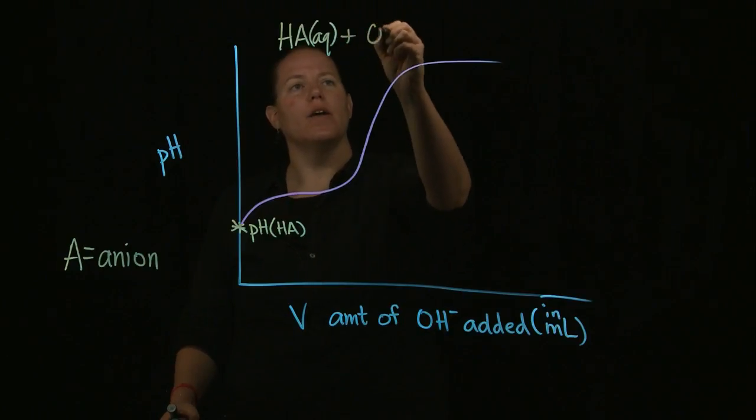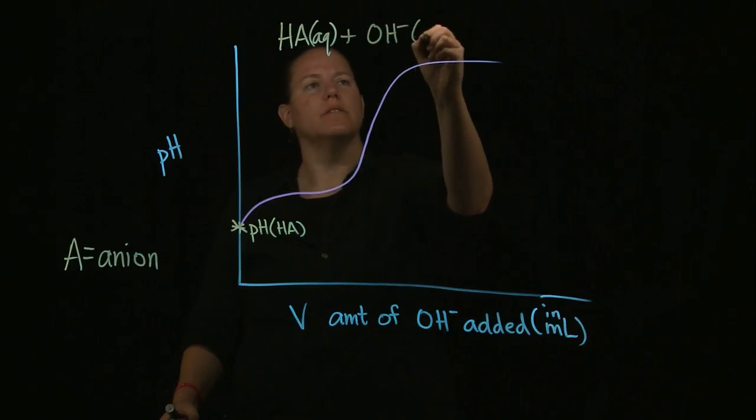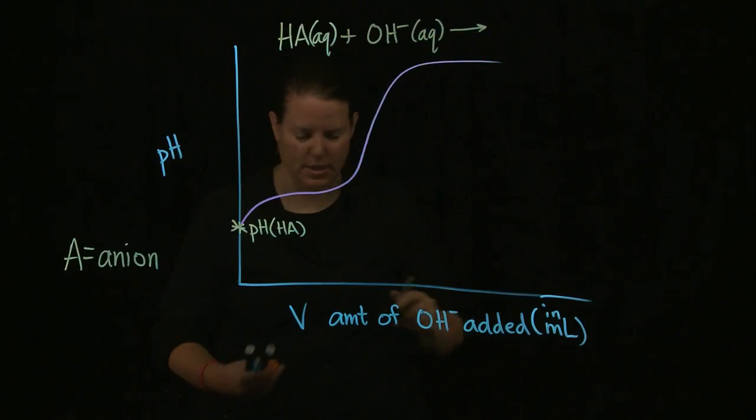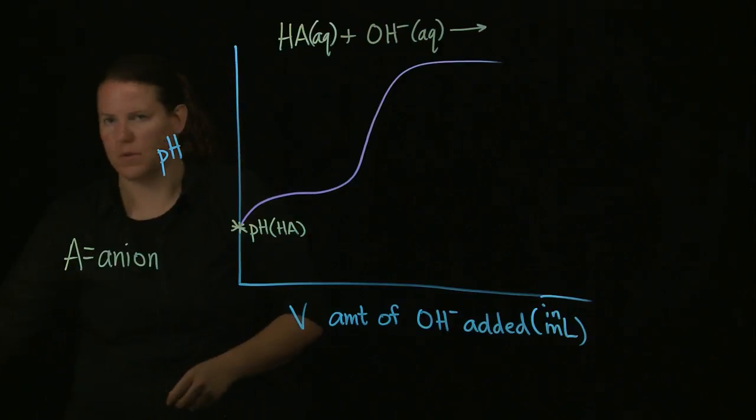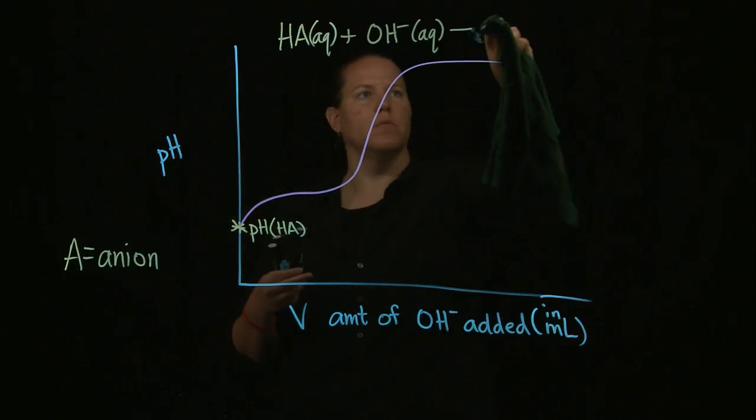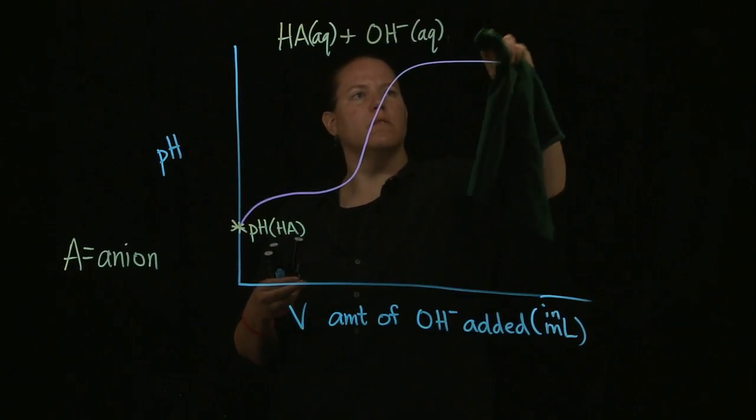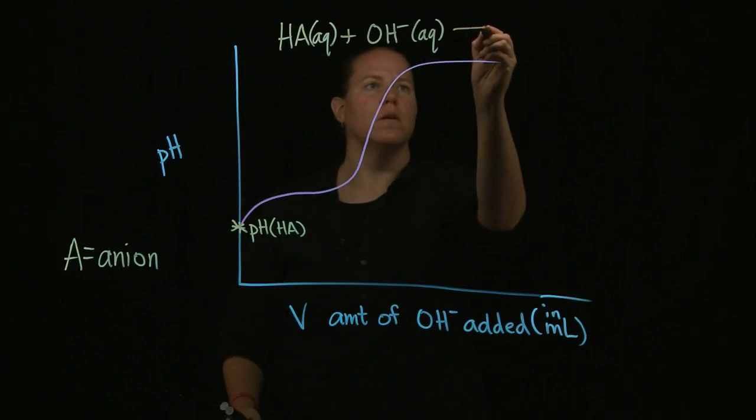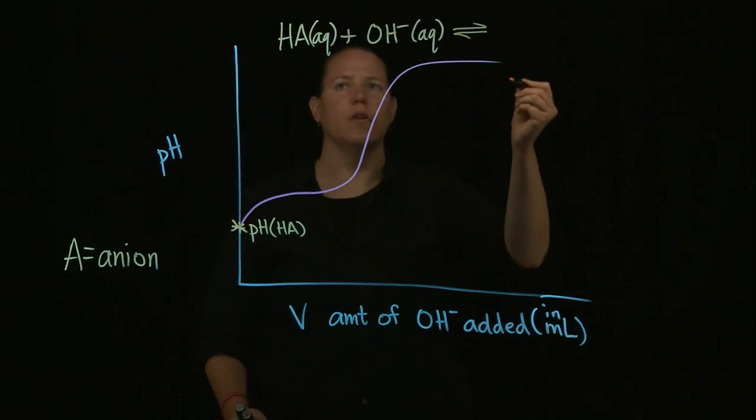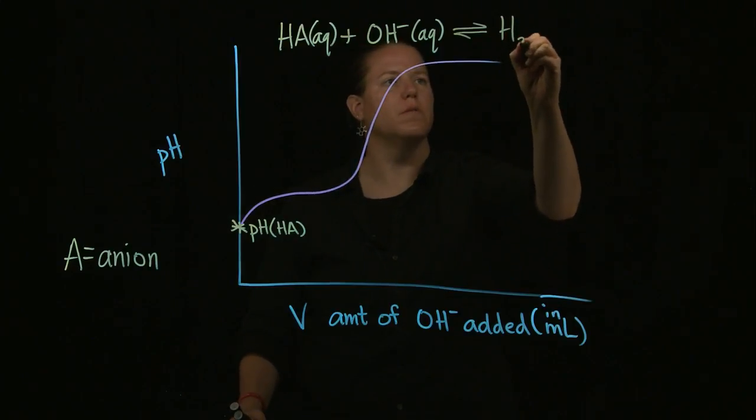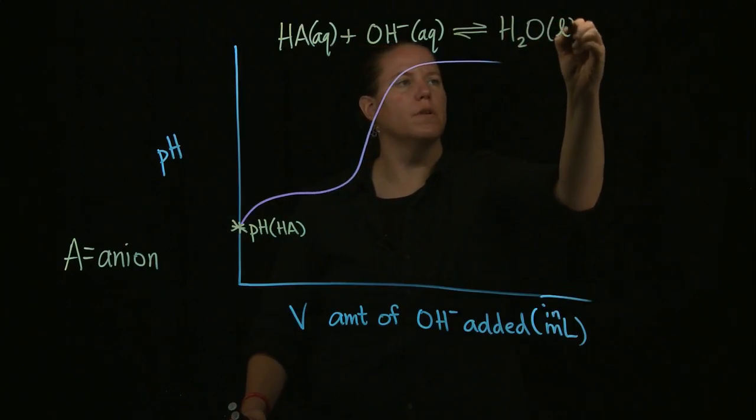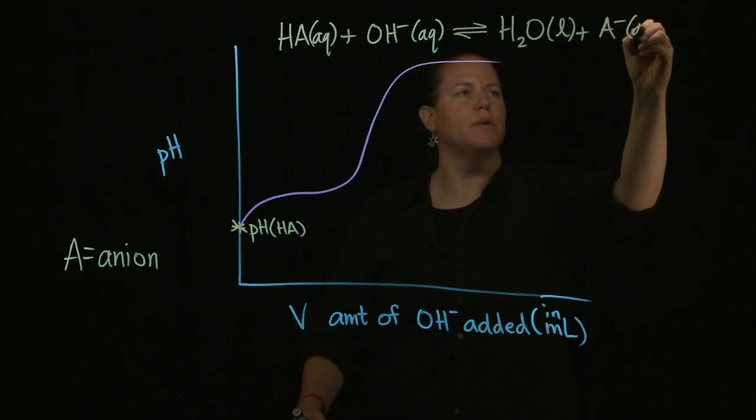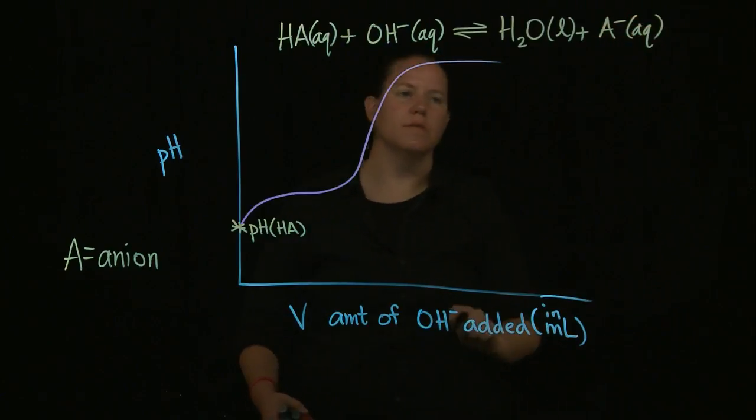And if I add OH minus to that, then what's going to happen, and this is not a single-headed arrow. There's a reason why this is called acid-base equilibria. I apologize. You're going to form H2O, which is a liquid, plus A minus, the conjugate base of the acid.